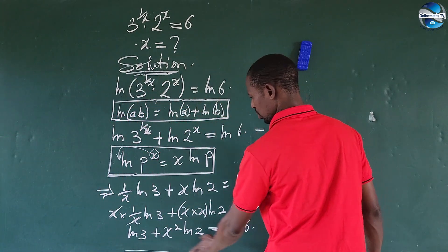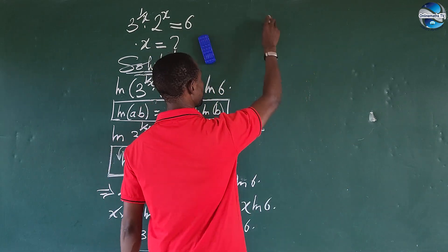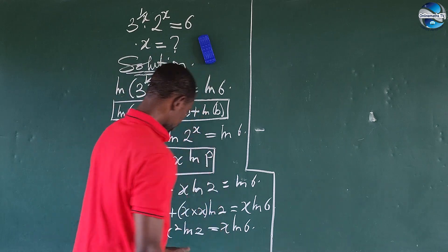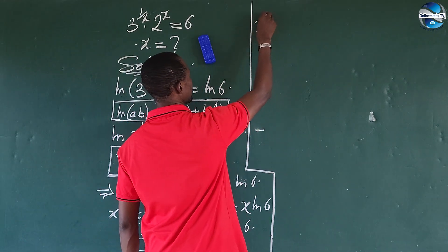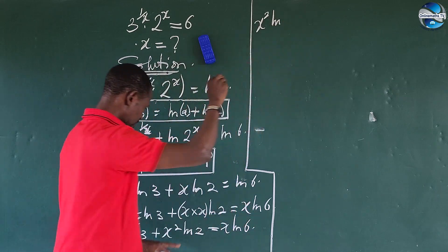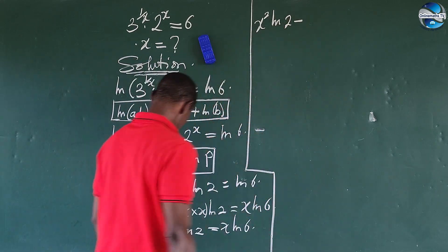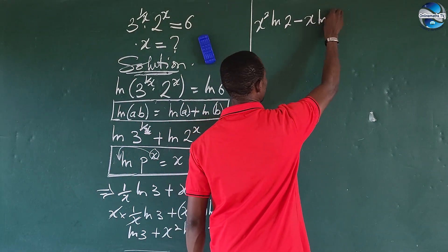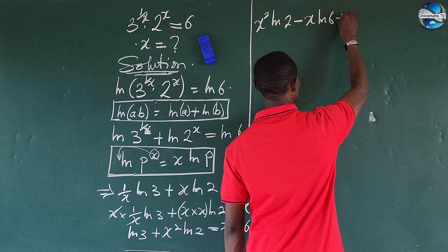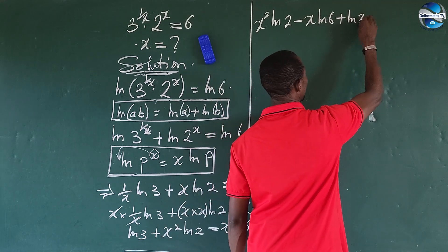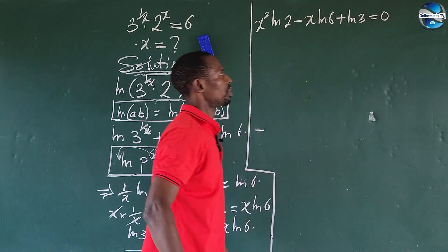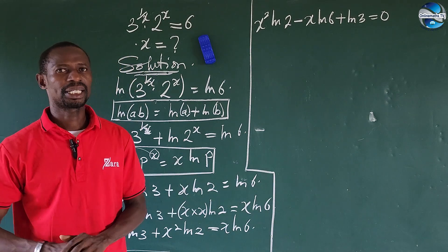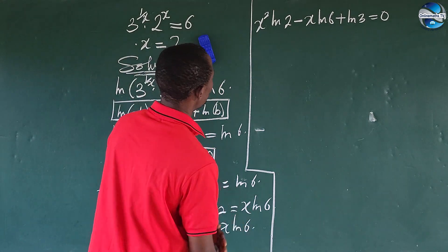We move all terms to one side and arrange the equation. This gives us: x squared times ln(2), minus x times ln(6), plus ln(3), equals zero. This is essentially a quadratic equation in x.